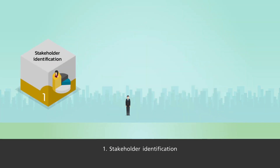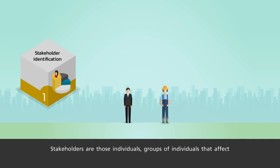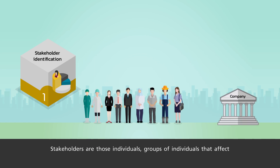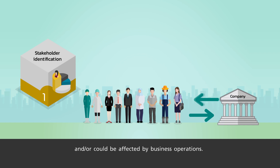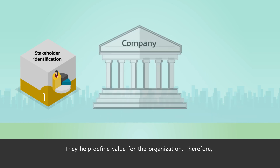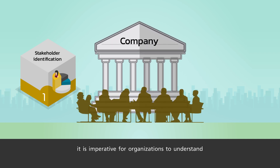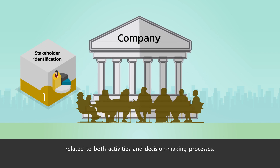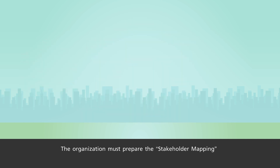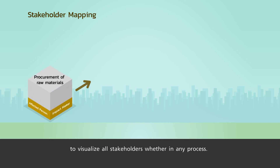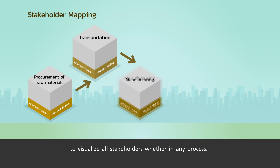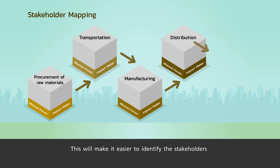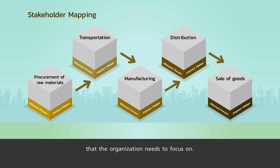Step 1: Stakeholder Identification. Stakeholders are those individuals or groups of individuals that affect and/or could be affected by business operations. They help define value for the organization. Therefore, it is imperative for organizations to understand and engage with stakeholders on issues related to both activities and decision-making processes. The organization must prepare stakeholder mapping to visualize all stakeholders, making it easier to identify the stakeholders that the organization needs to focus on.